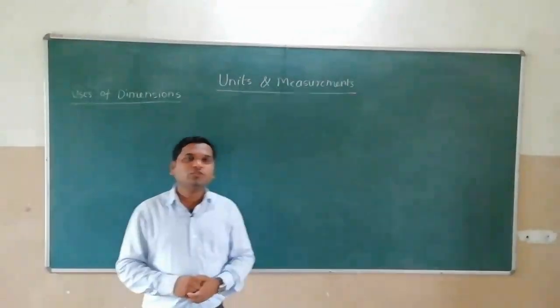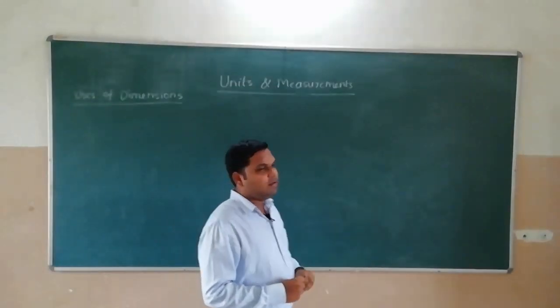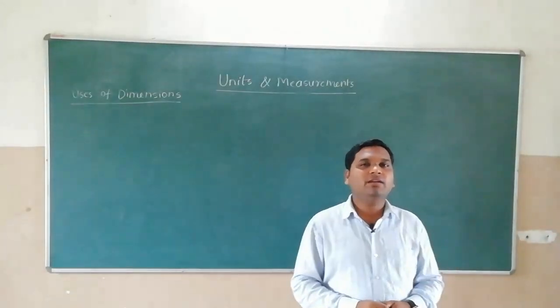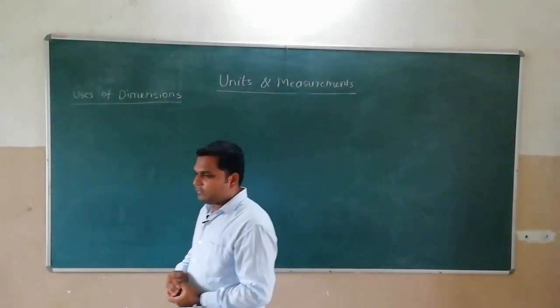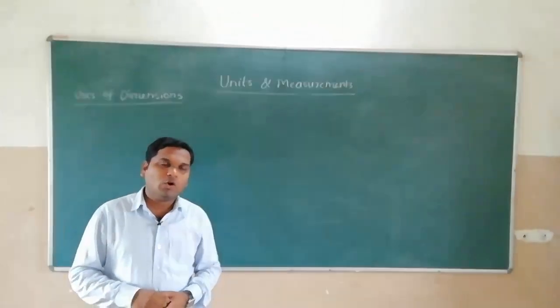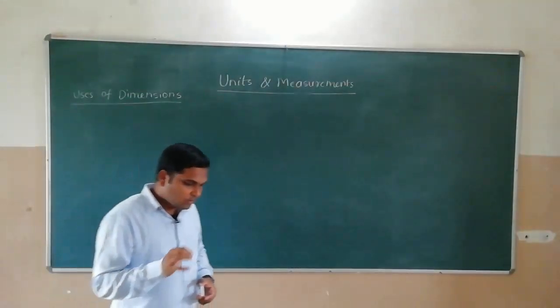What is the third use of dimensions? It is to find exact relation between already related physical quantities. To find exact relation between already related physical quantities.